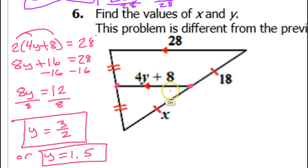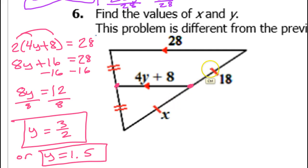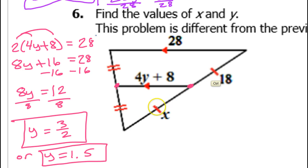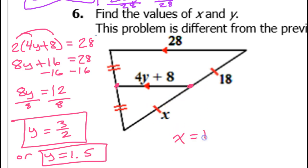What about x? You don't have to do any calculations for x. The tick marks tell the story — these segments are congruent. So x is simply equal to 18.